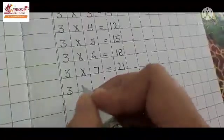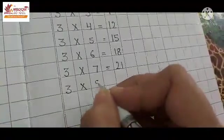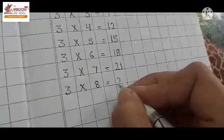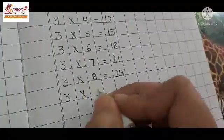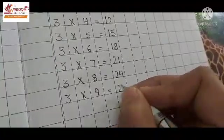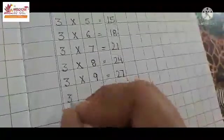3 times 8 is 24. 3 times 9 is 27. 3 times 10 is 30.